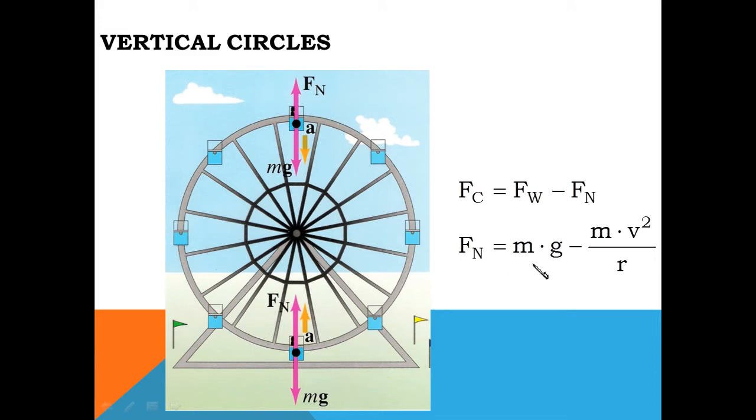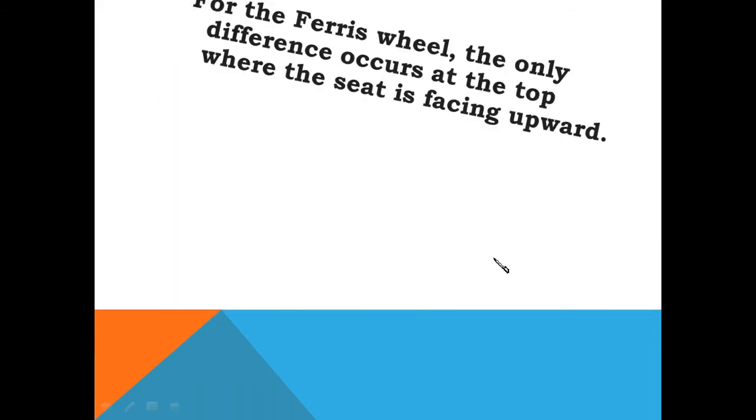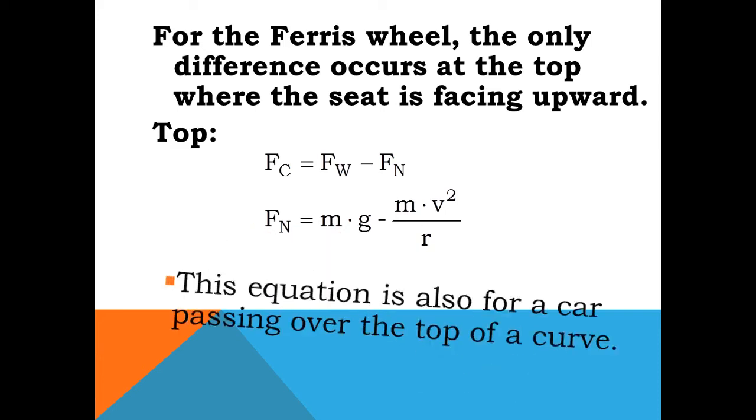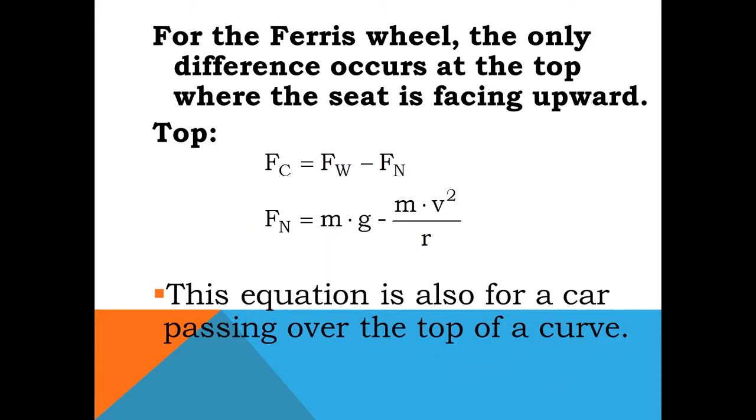For the Ferris wheel, the only difference occurs at the top where the seat is facing upward. At the top, F_C is equal to F_W minus F_N, and from here F_N equals mg minus mv squared by r. This equation is also for a car passing over the top of a curve.